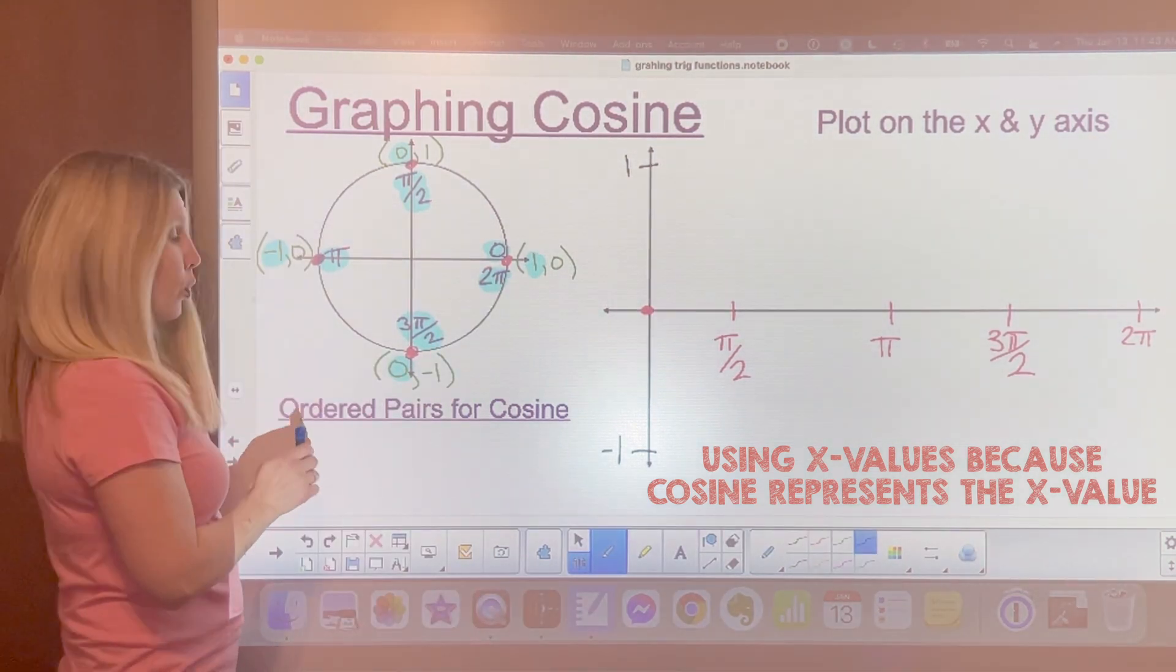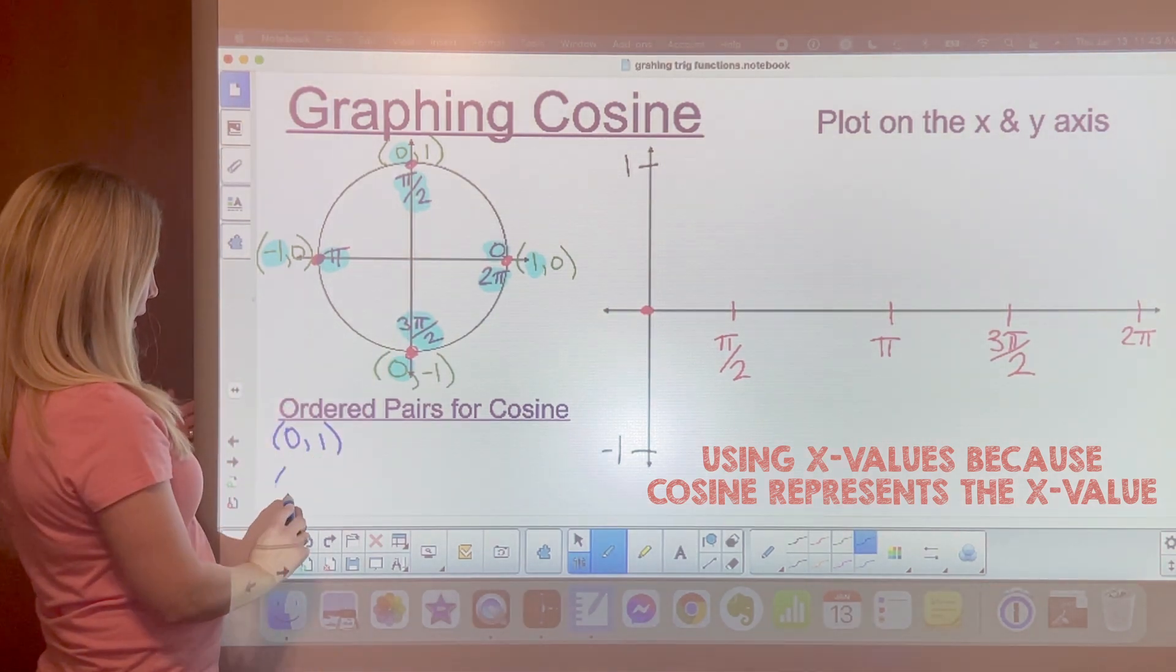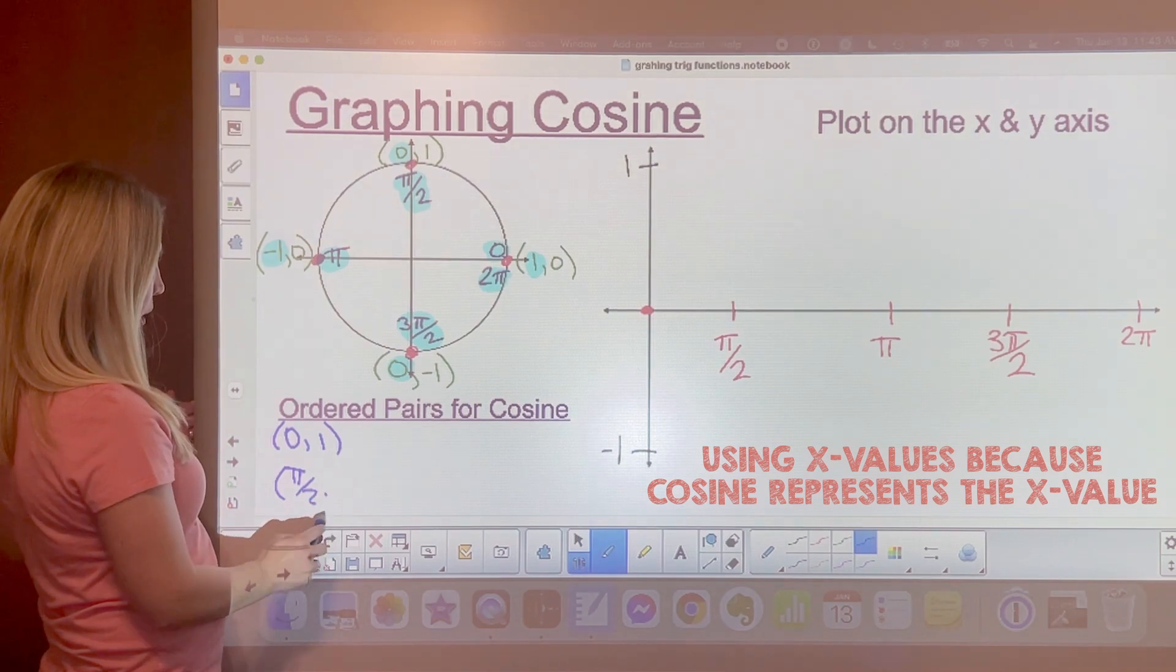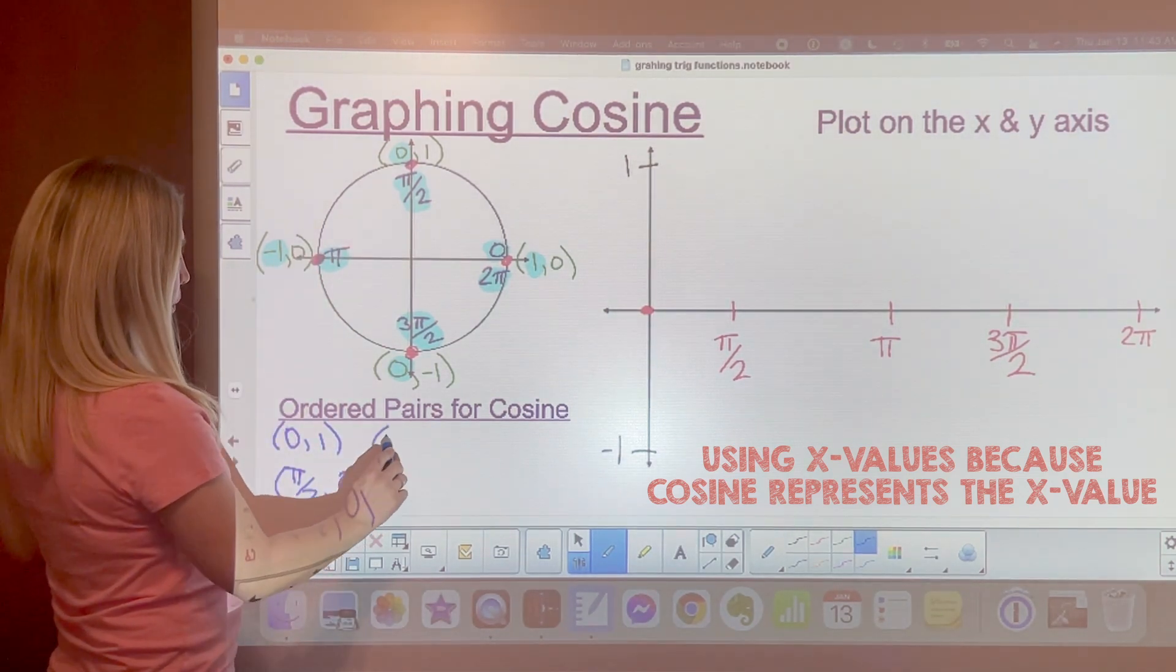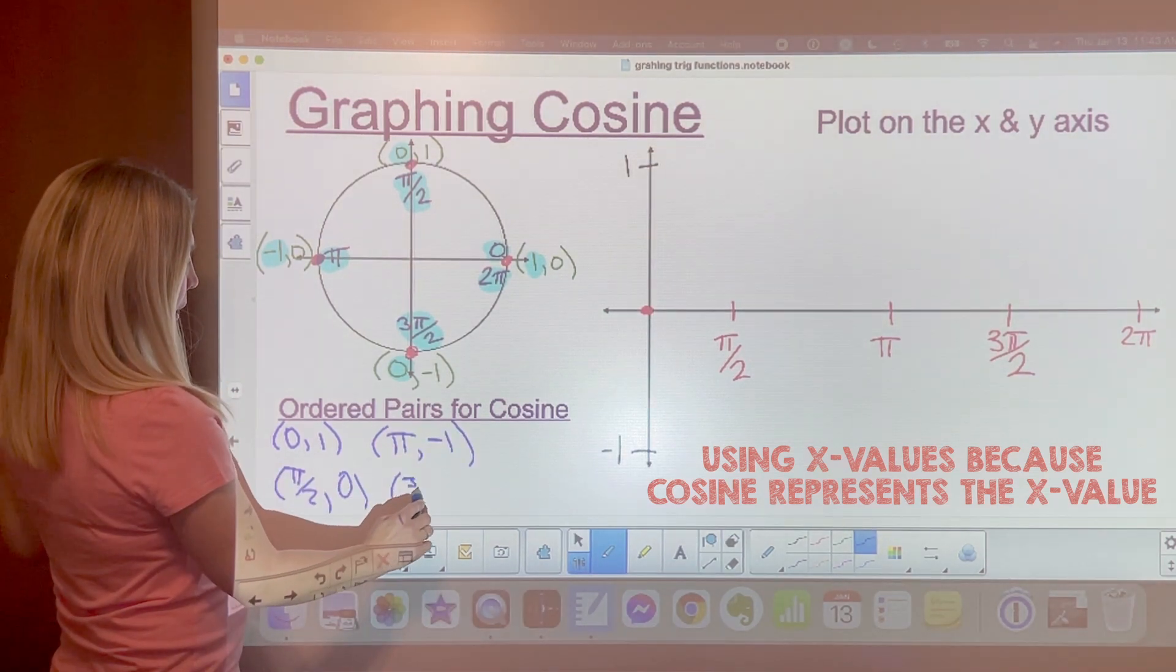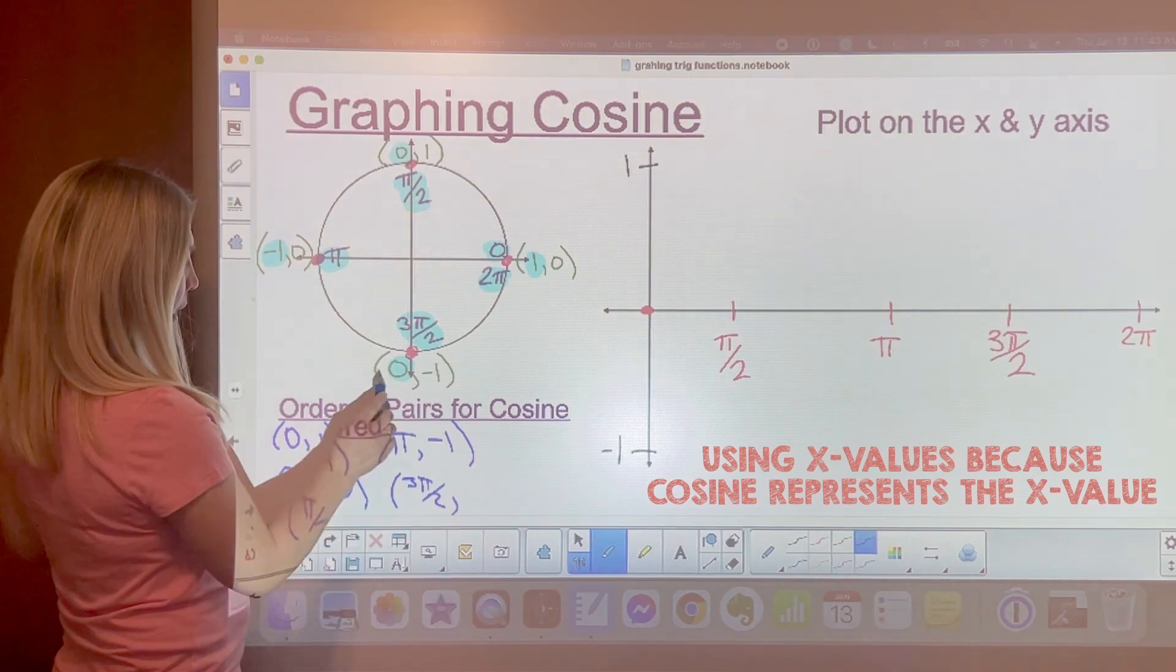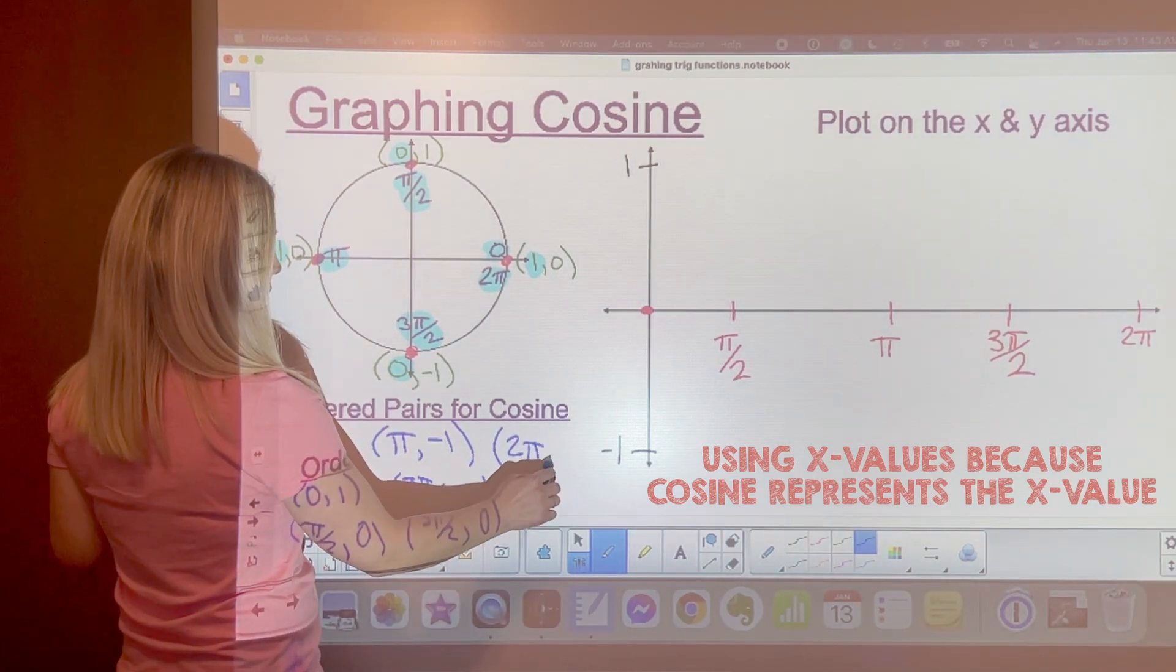Now let's go ahead and label the ordered pairs. The ordered pairs are 0 comma 1. Then we have pi over 2 comma 0. Then over on the left we have pi and negative 1. 3 pi over 2 and 0. And then we have 2 pi and 1.